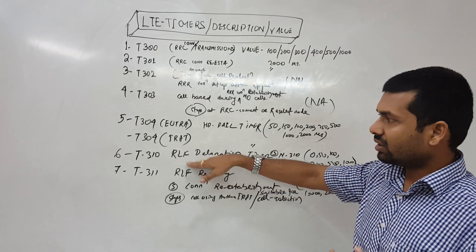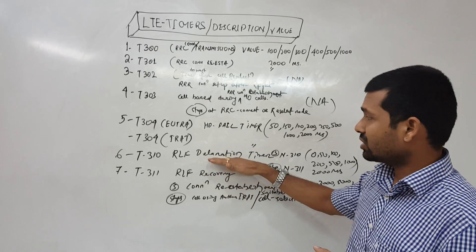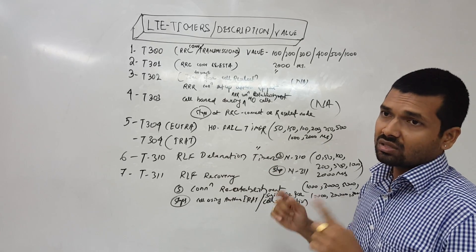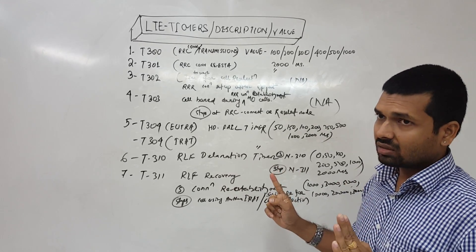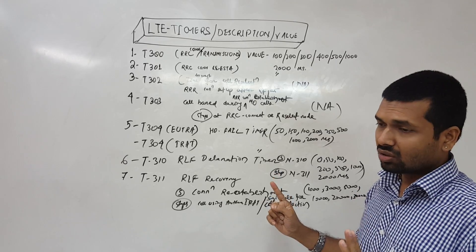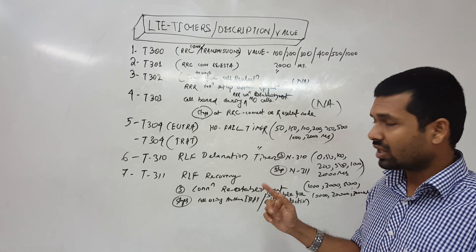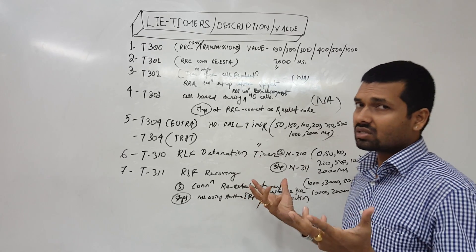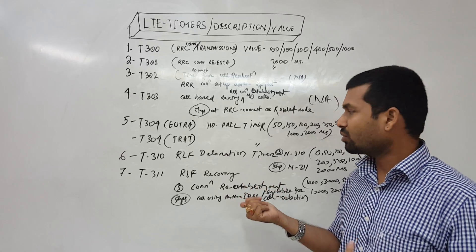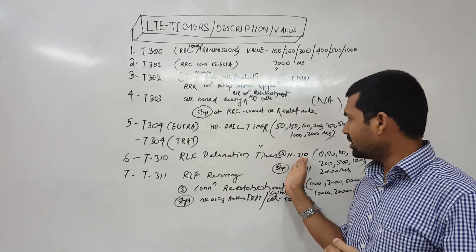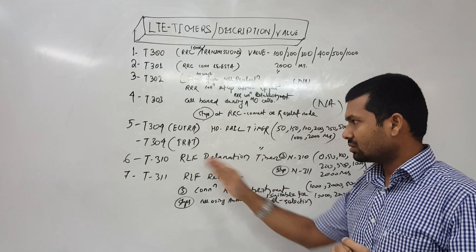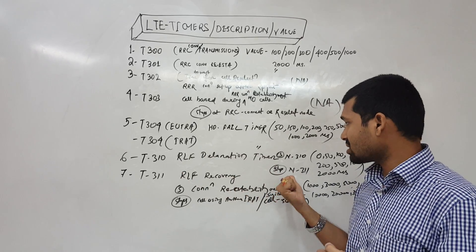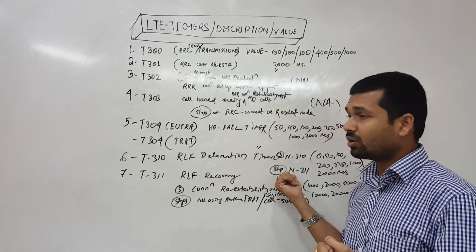Radio link failure declaration timer is measured when we have bad radio condition or bad physical layer condition that is reported, or we get some out of sync information. Then T310 starts and this timer ends or stops when N311 is triggered.